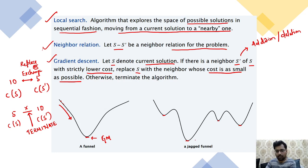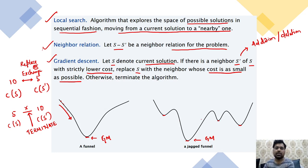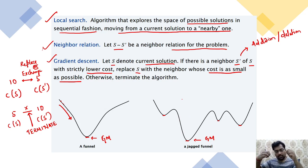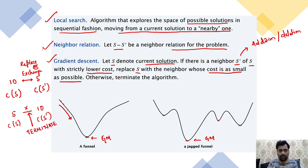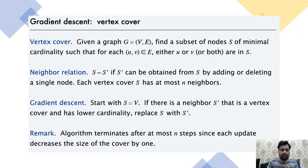If there is a jagged funnel, as discussed earlier, there are certain minimums but only one is the lowest — that is the global minimum. To reach it, you compare the current cost with the neighbor cost, and if the neighbor cost is less, you switch. This is gradient descent: a combination of neighbor relation and local search.